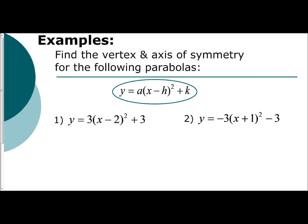In the following video, we're going to apply the general form — the vertex form — in order to find the axis of symmetry and vertices in the following quadratics. We're given first y equals 3 times the quantity x minus 2 squared plus 3. Here is our vertex form, our general form. What we want to do first is we want to identify our a, h, and k values.